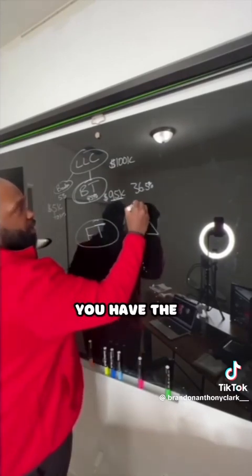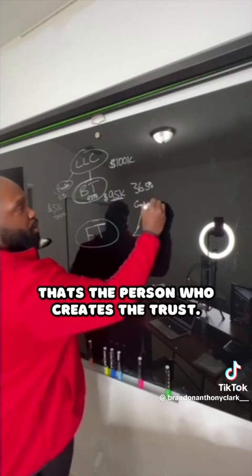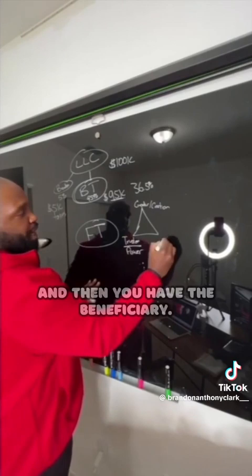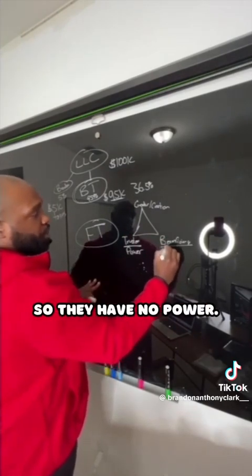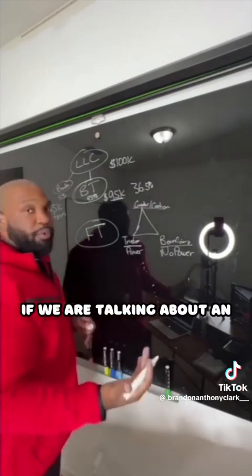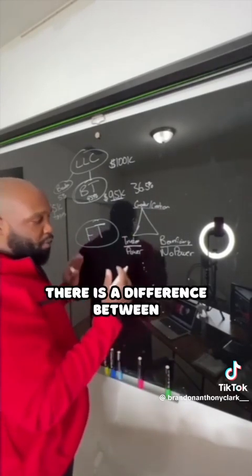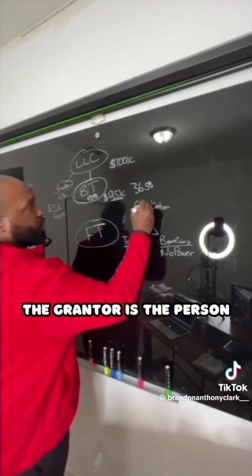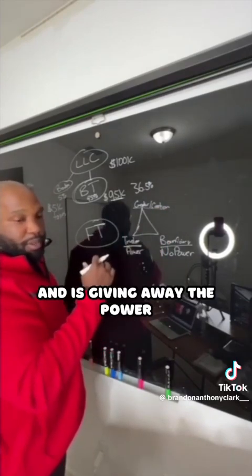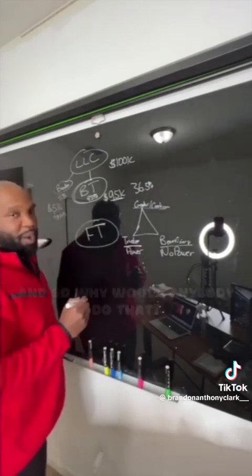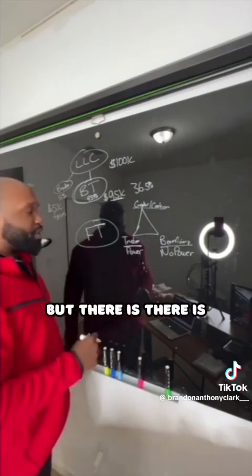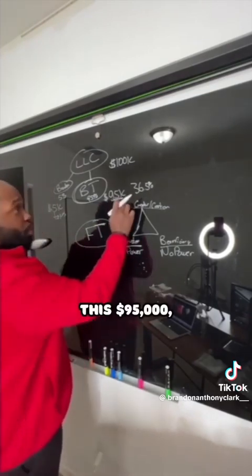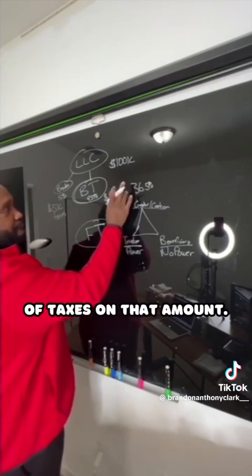There are three entities to a trust. You have the grantor or the creator — that's the person who creates the trust. Then you have your trustee — this is the person who has all the power. Then you have the beneficiary — they have no power. There's a difference between an irrevocable trust and a revocable trust, also known as a living trust. The grantor is the person who has the power and is giving away the power to the trustee. This $95,000 — I would owe 36 to 37% taxes on that amount.